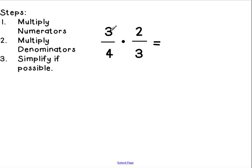Step one, multiply our numerators. Our numerators are our top numbers, 3 times 2 is 6. Multiply the denominators, bottom numbers, 4 times 3 is 12.